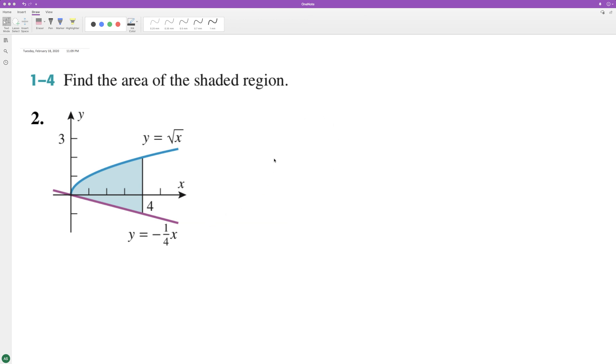The square root of x and negative one-fourth x, and it looks like between zero and four. So that's going to be zero to four, square root of x minus negative one-fourth x, so it just becomes plus one-fourth x, and we're going to integrate.